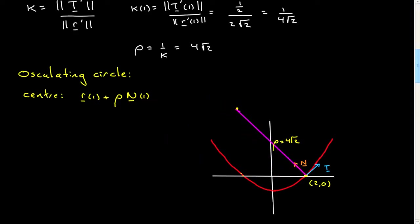It necessarily is tangent to the curve here. If I go rho units away from the curve, and then draw a circle with radius rho, it will necessarily touch the curve here, and it will just kiss the curve. That's what oscillating means. It will come around and kiss the curve there.